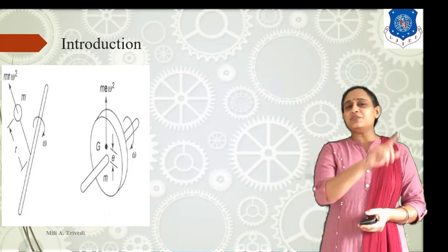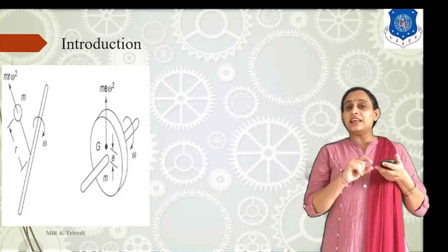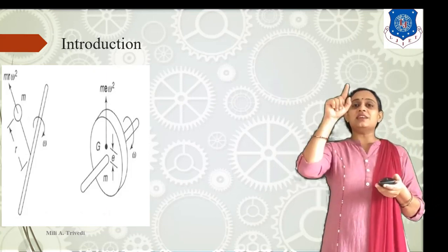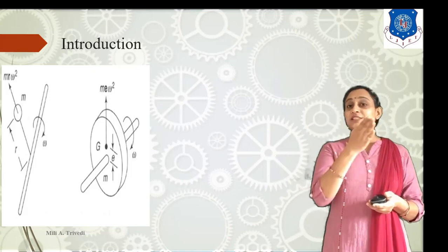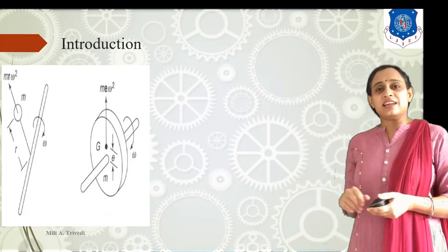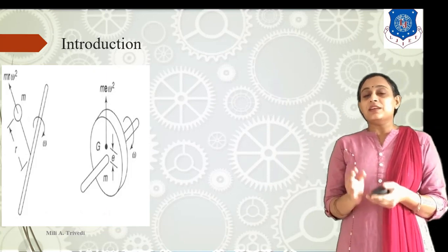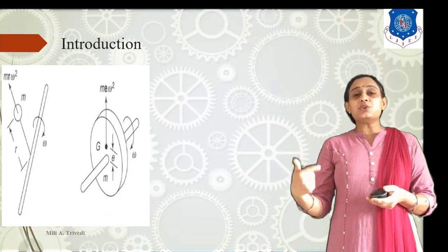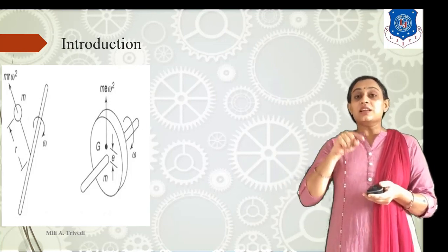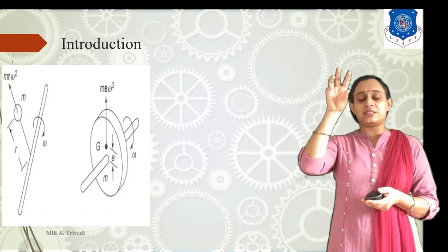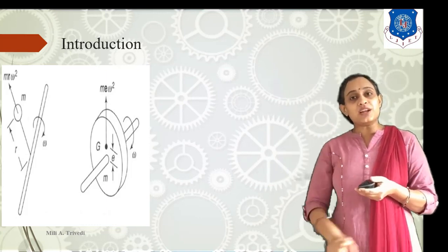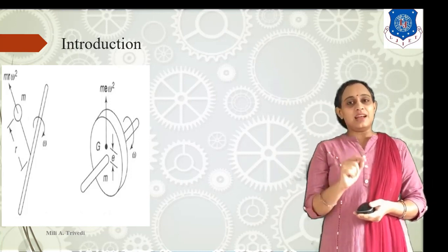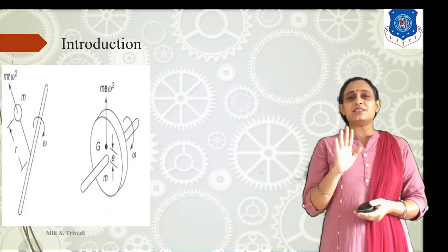We have the first diagram. In our case, there is a shaft and mass M is attached to this shaft at a radius R towards the upside, as you see in this diagram. The system will rotate with omega angular velocity, and the mass which is rigidly fixed to the system will also rotate with omega angular velocity. The centrifugal force generated is M·ω²·R.